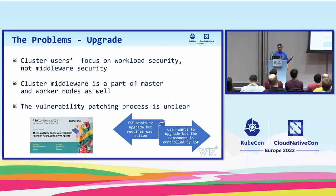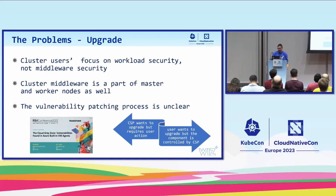If we talk about the previous research about cluster gray zone, our vulnerability research group found a vulnerability in the OMI agent in Azure. However, it wasn't clear who's supposed to fix it — whether it's the customer's responsibility or CSP's. Similar problems exist in managed clusters. Two scenarios: first, CSP wants to upgrade but requires user action — and upgrading worker nodes in a production cluster is not trivial. Second, the user wants to upgrade but the component is controlled by CSP, so they can't.